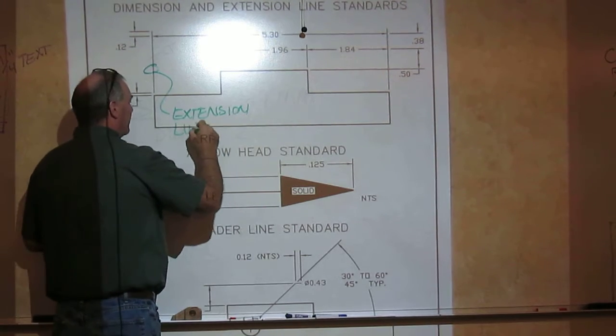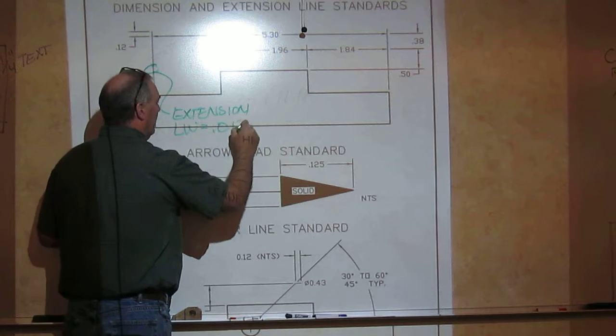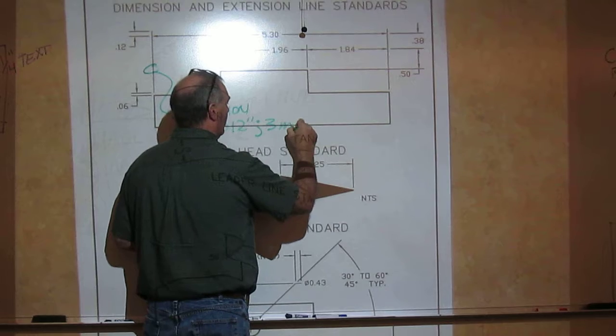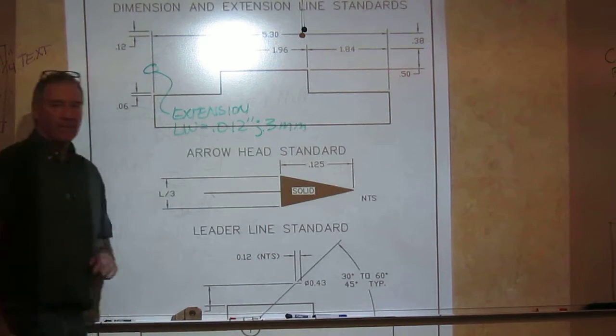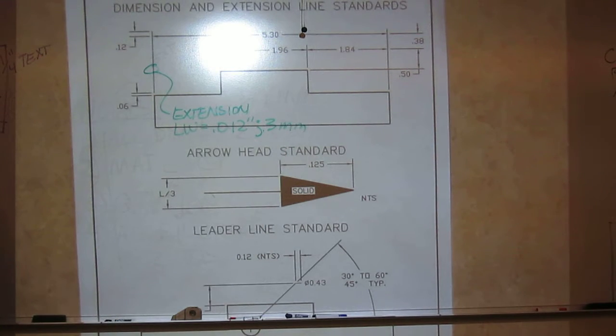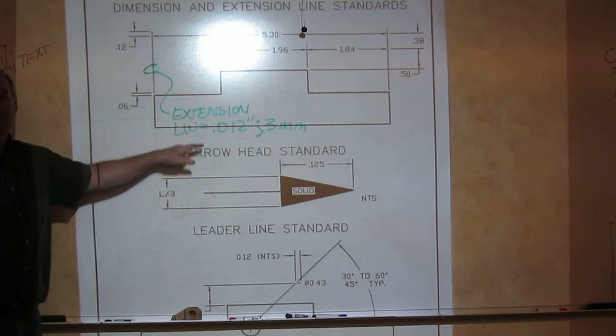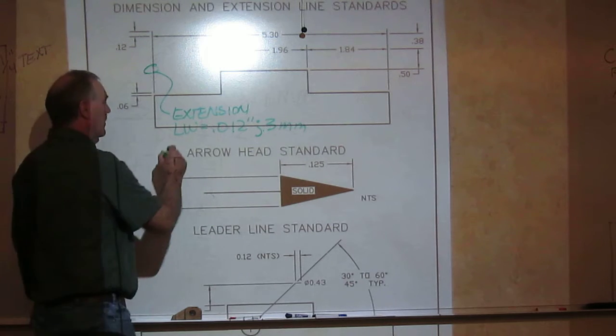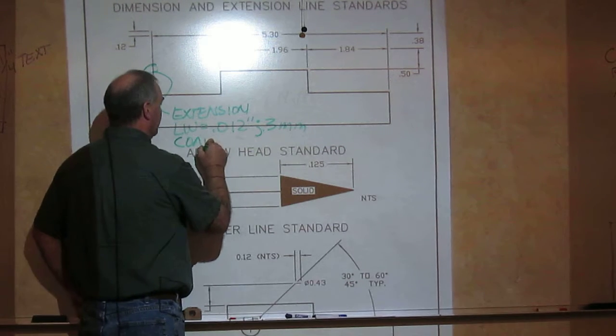The line weight of that is .012 inches or .3 millimeter. So if we're doing it by pencil or if we are doing it by computer, we have a layer set up in our templates called the dim layer that is set up to these standards.